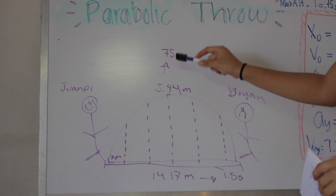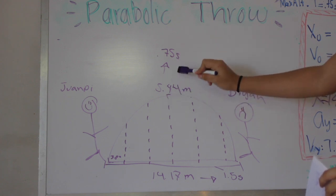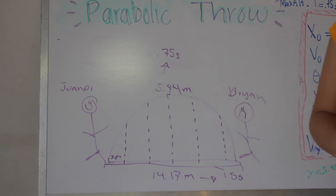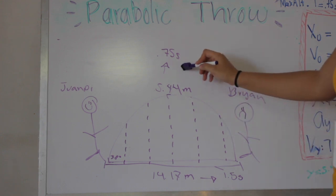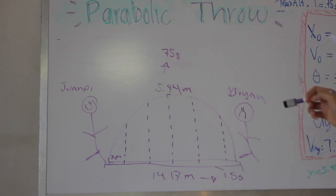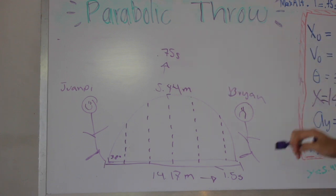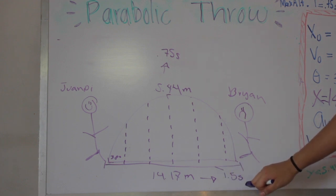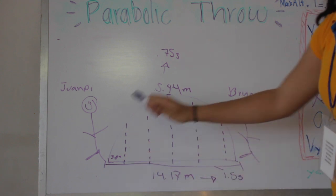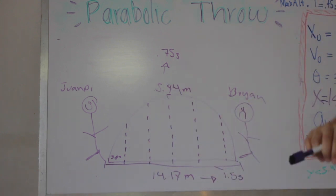So, the total distance X is 14.17 meters. The maximum height the ball reached was 5.44 meters, and it took 0.75 seconds to reach that maximum height. The total flight time was 1.5 seconds. And that's all — thank you!